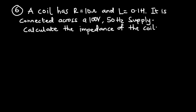For this question, a coil has resistance R of 10 ohms and inductance of 0.1 henry. It is connected across a 100 volt, 50 hertz supply.